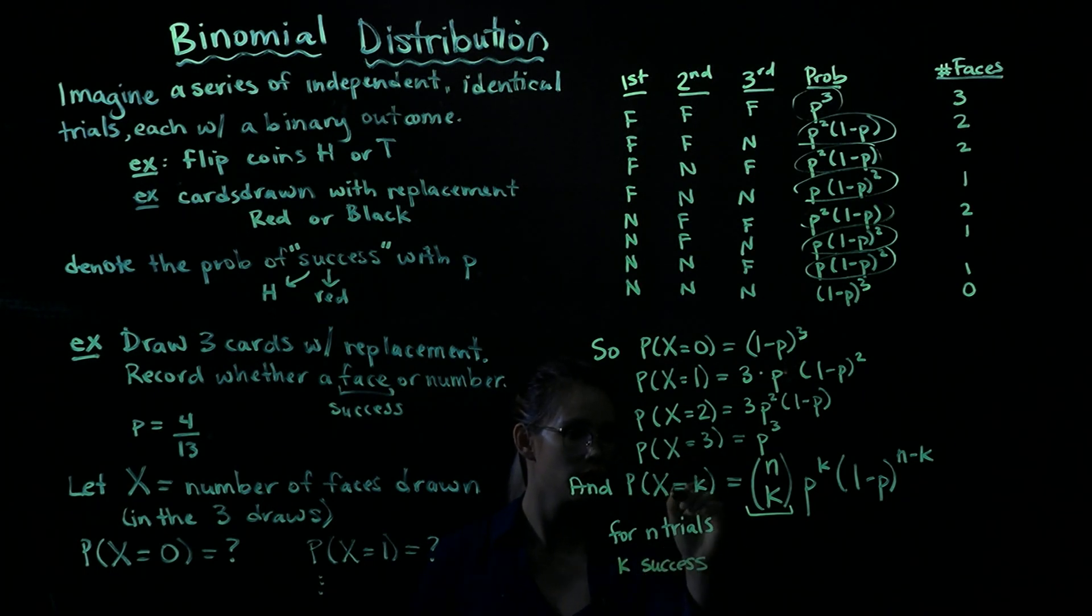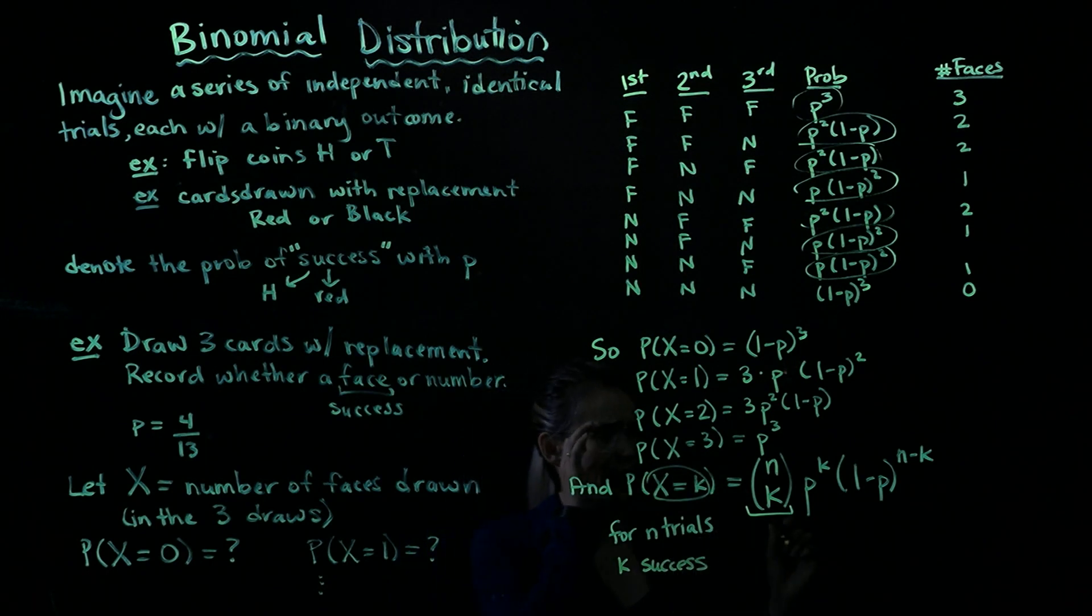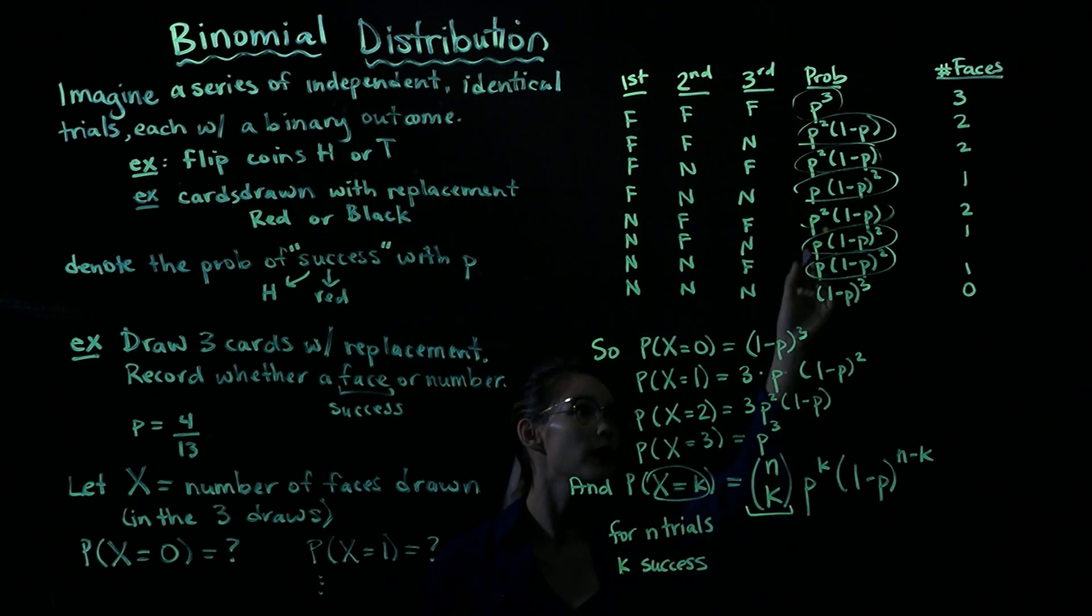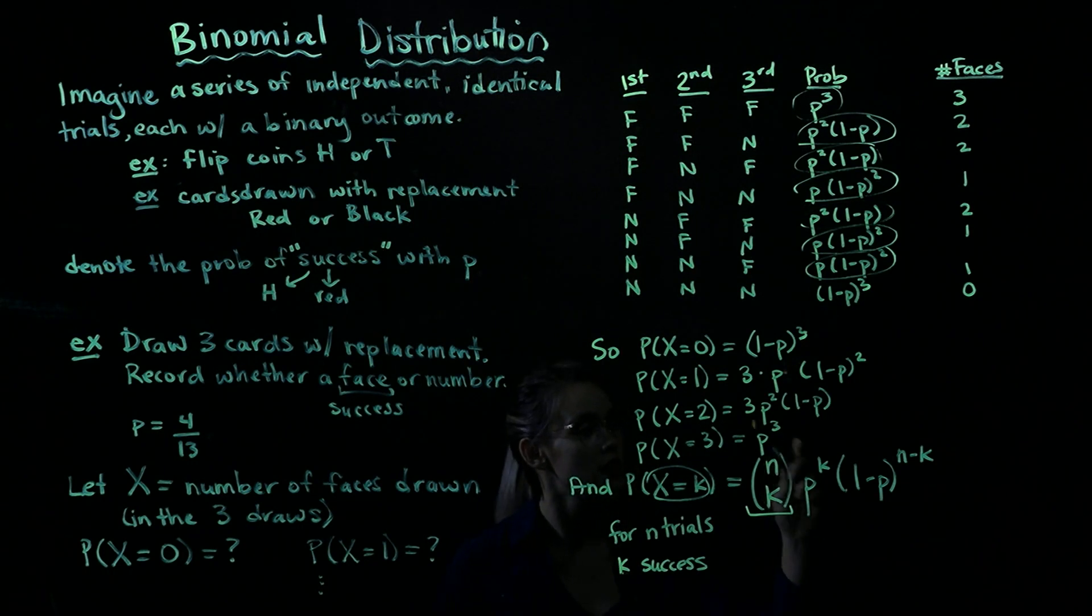Here we have P, which is the probability of success. So if we have K successes, we figured out that we need to take the probability of success and raise it to the Kth power. So then that means if we have K successes, we must have n minus K failures. So we have the probability of failure, one minus P, to the number of failures, n minus K.